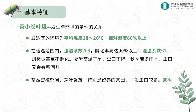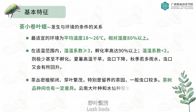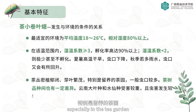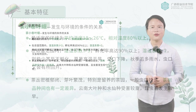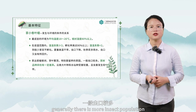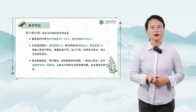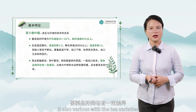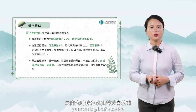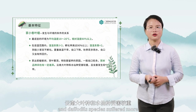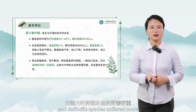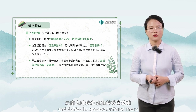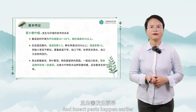Dense tea canopies with lush buds, especially in the tea garden, generally have more insect population. Insect populations also vary with tea varieties. Yunnan big leaf species and daffodil species suffer more damage, and insect pests happen earlier in these varieties.